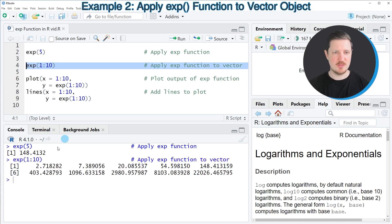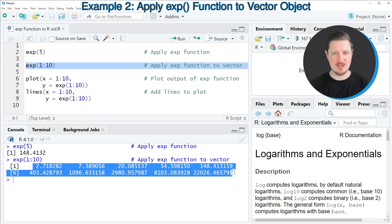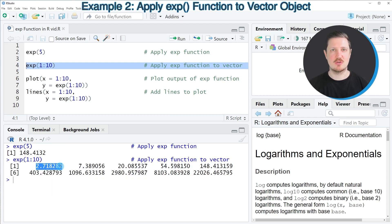So after running this line of code, you can see that a vector object containing 10 exponentials is returned. And each of these values corresponds to one of the input values in our vector of 1 to 10.